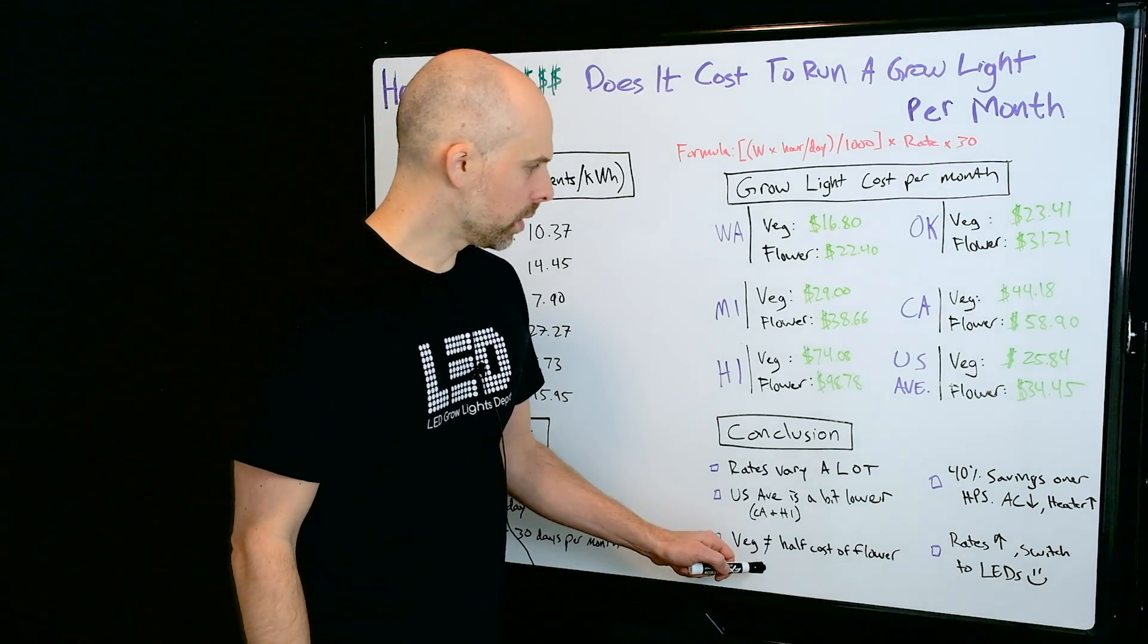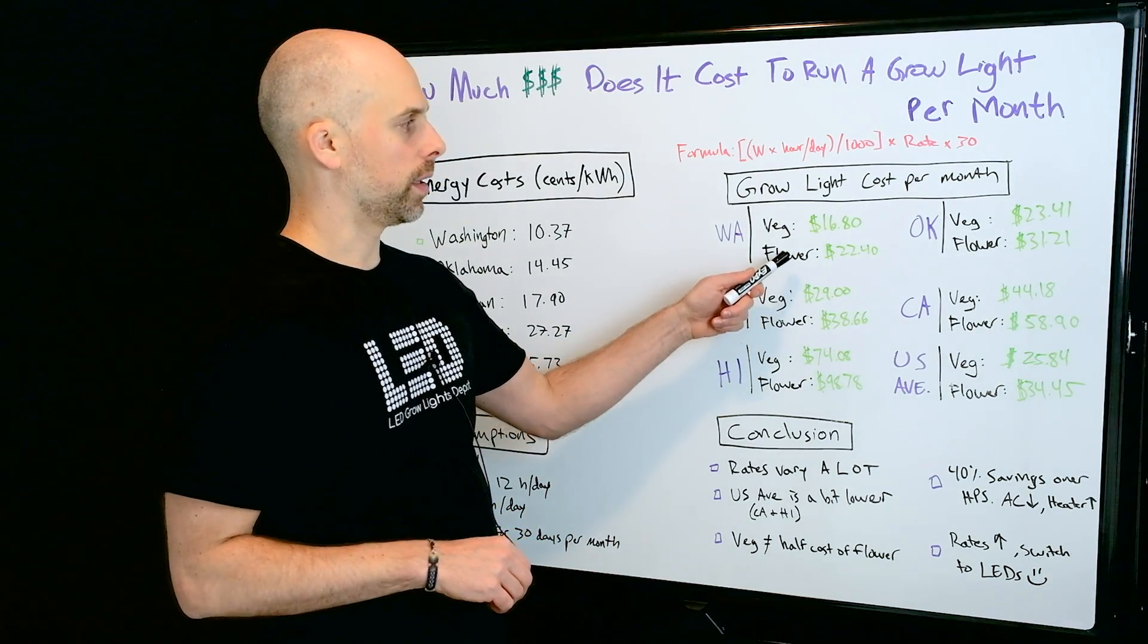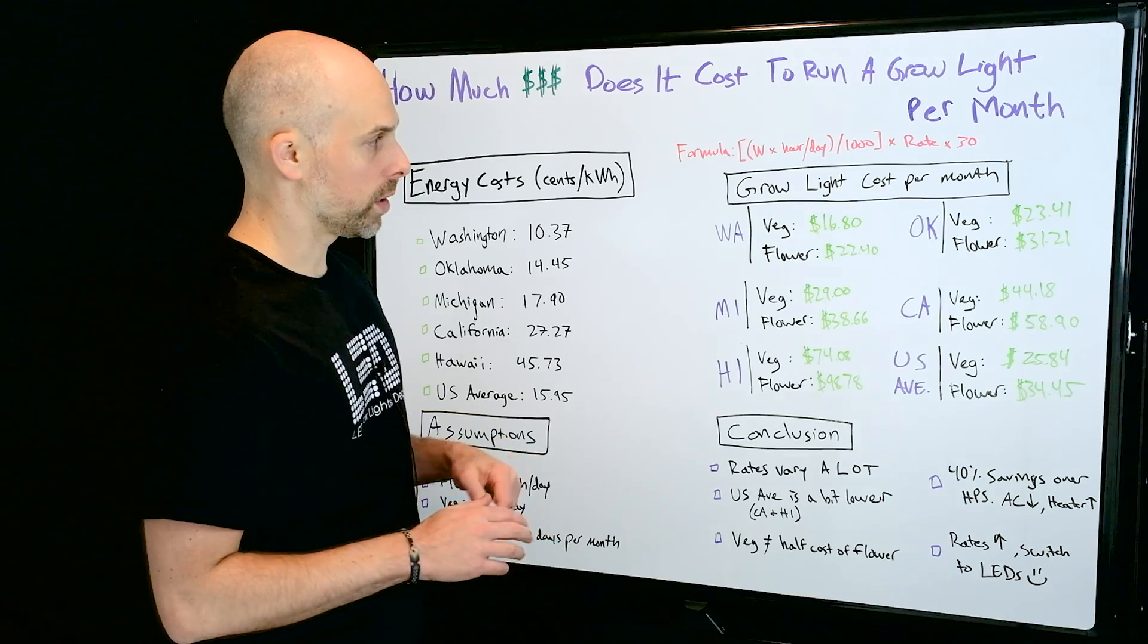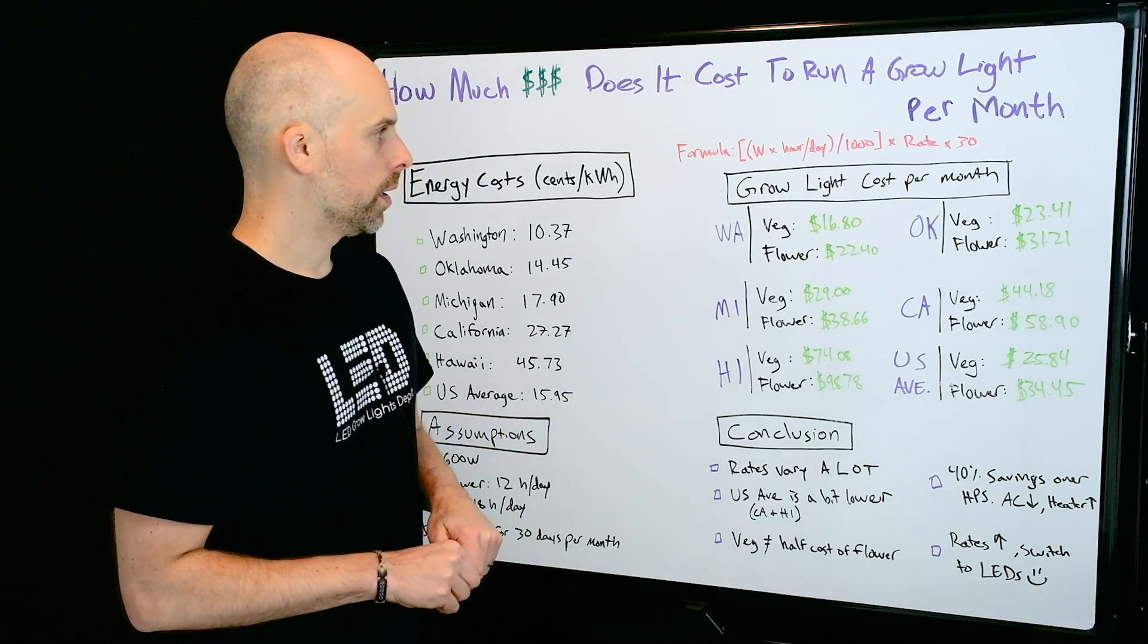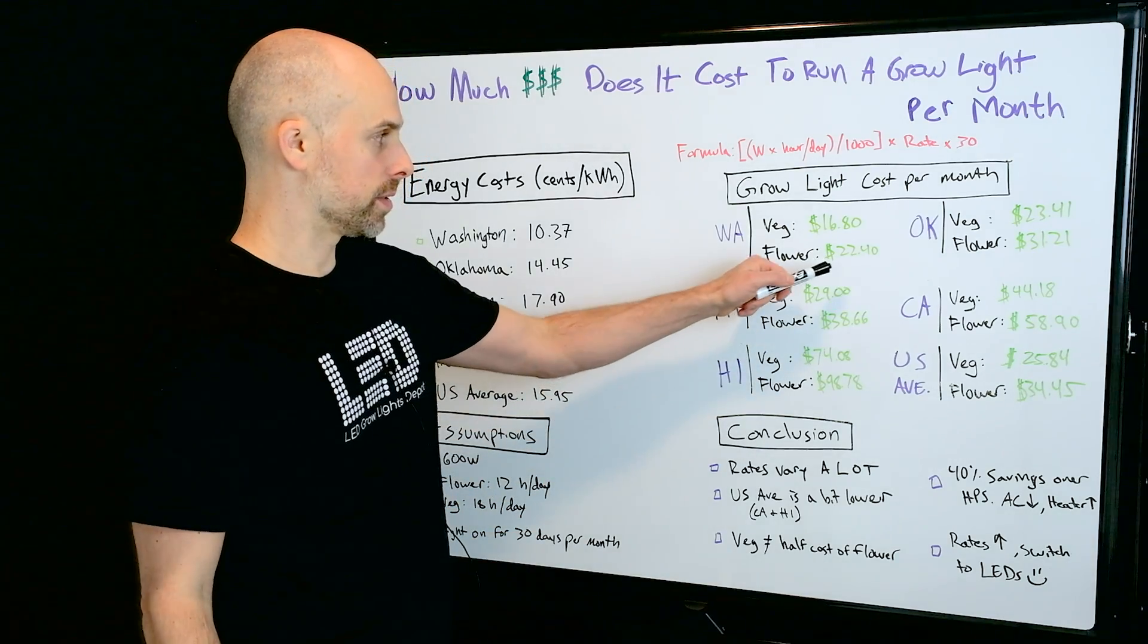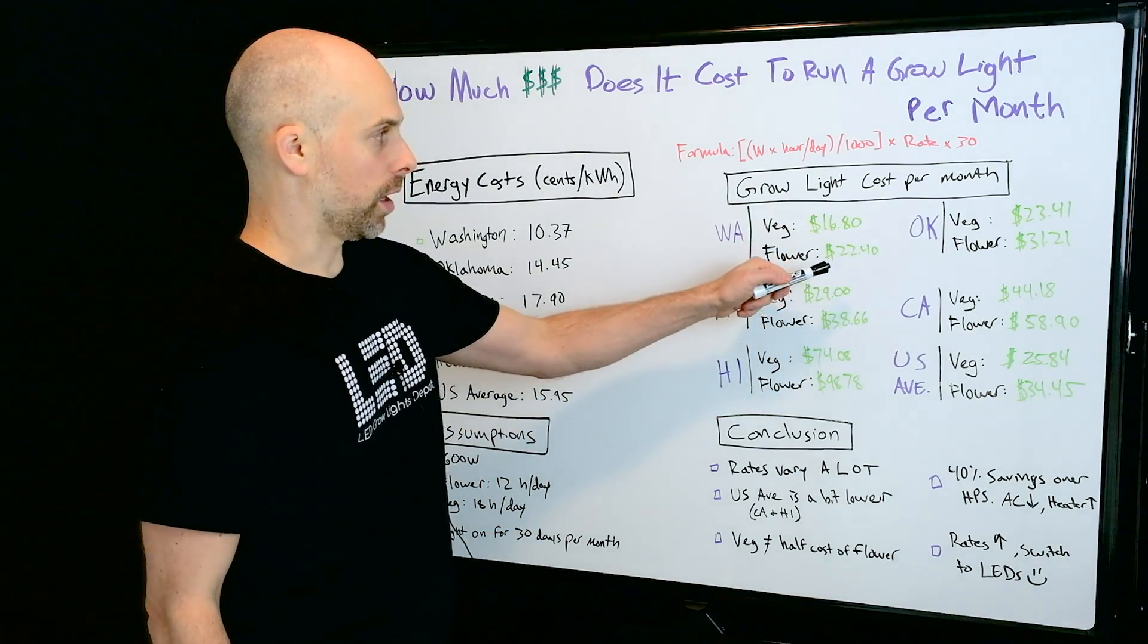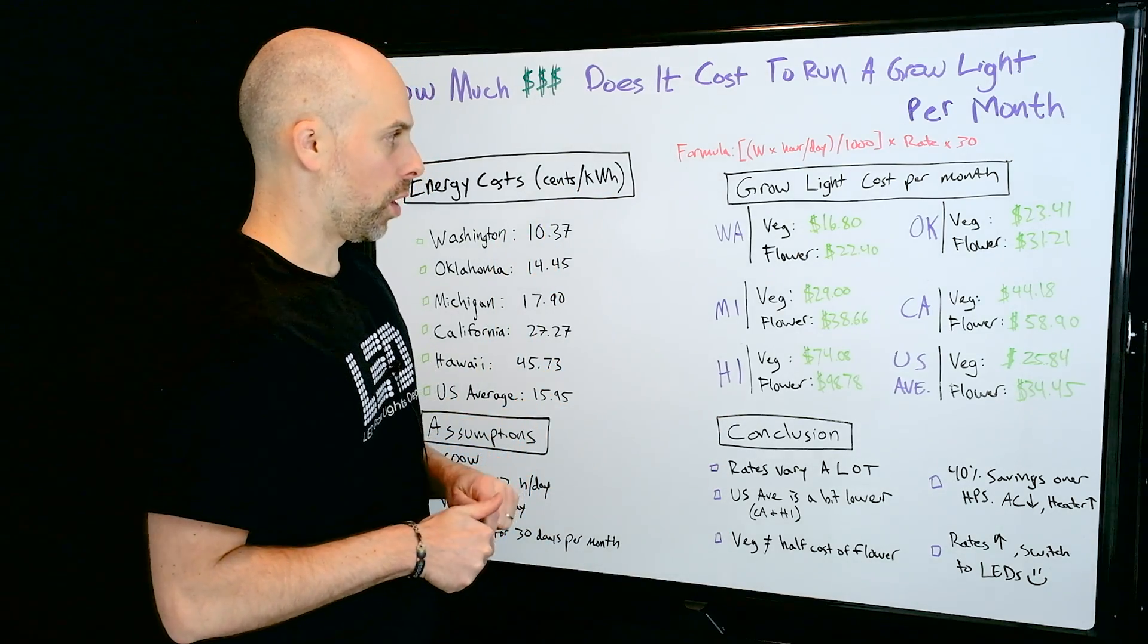And also, you might just quickly think that since you are running the light at veg at 50%, say 300 watts, because you don't need as much light to veg as you do to flower, that it's going to be half the cost of flowering. But as you can see, veg is not half the cost because you're running the light for 18 hours, not for 12 hours.